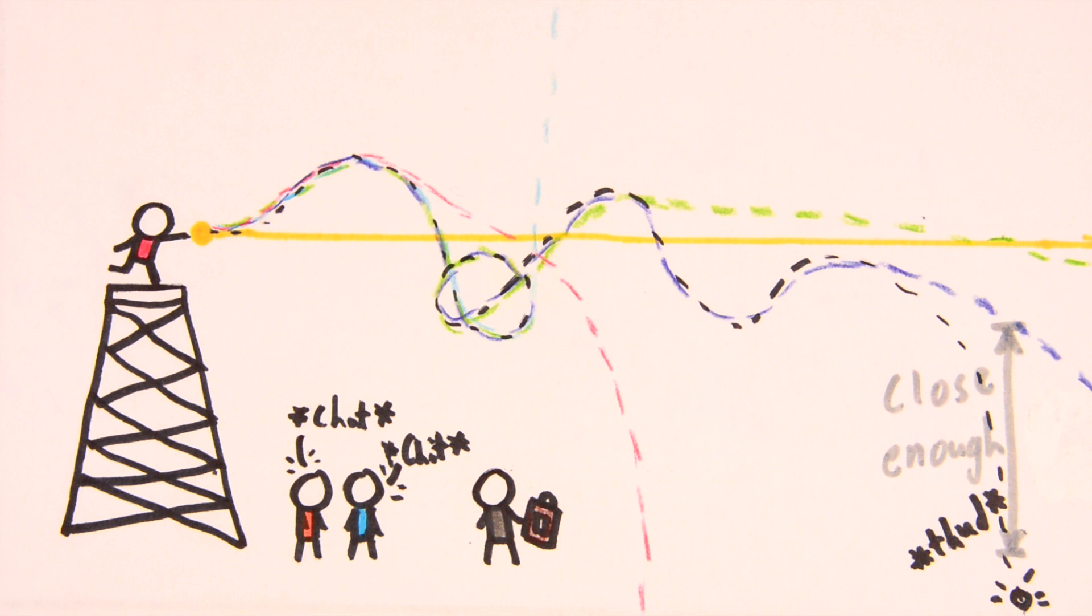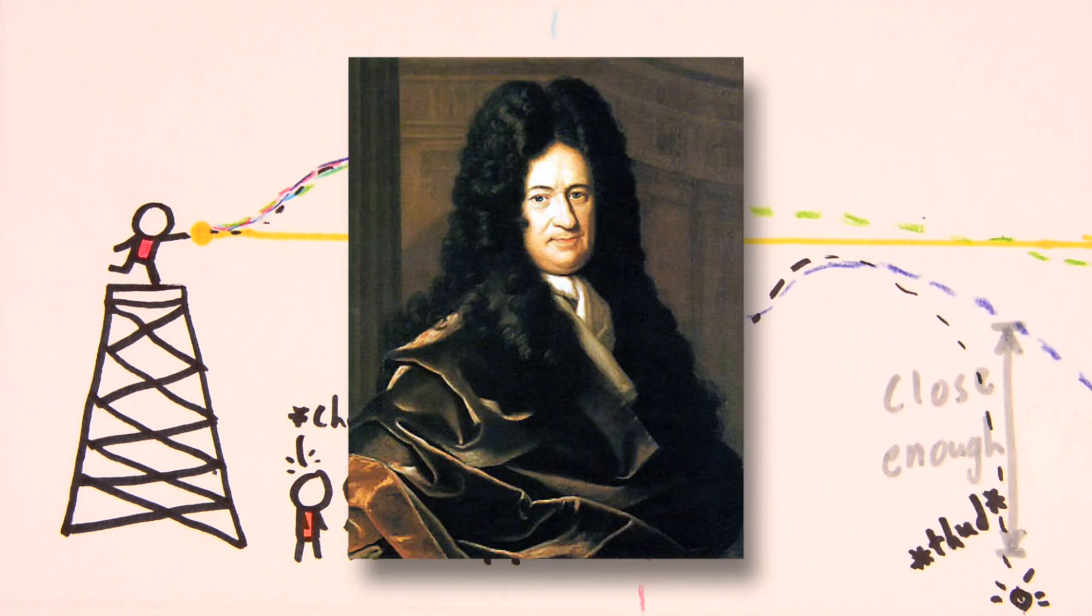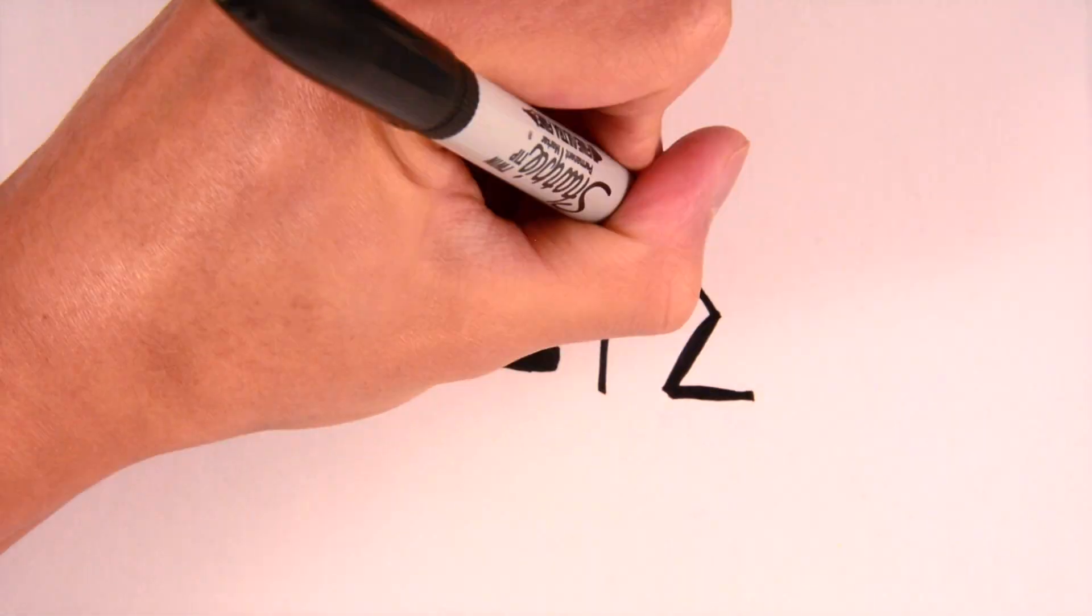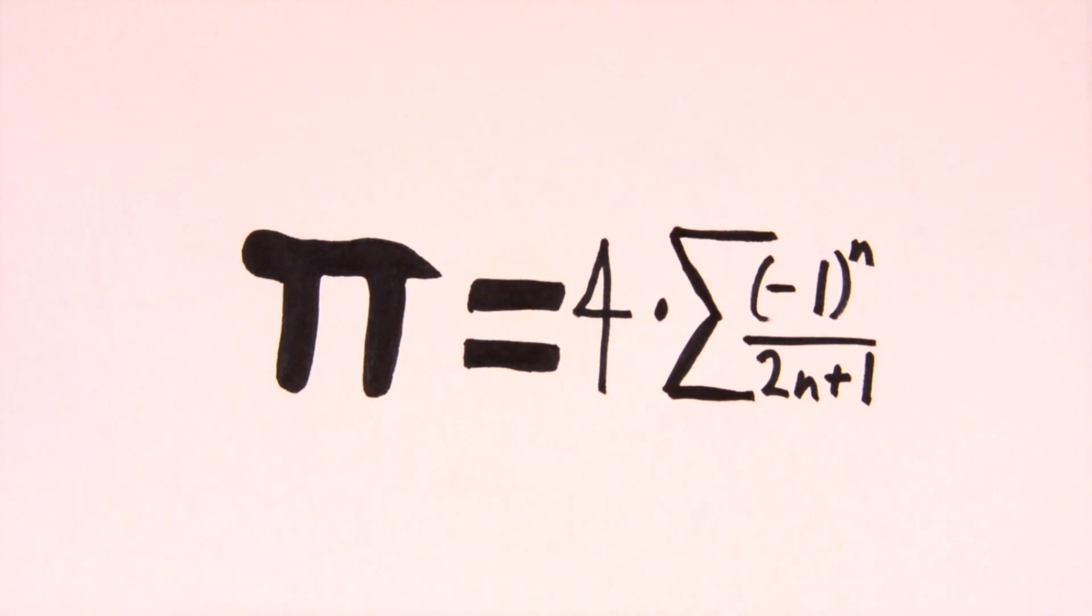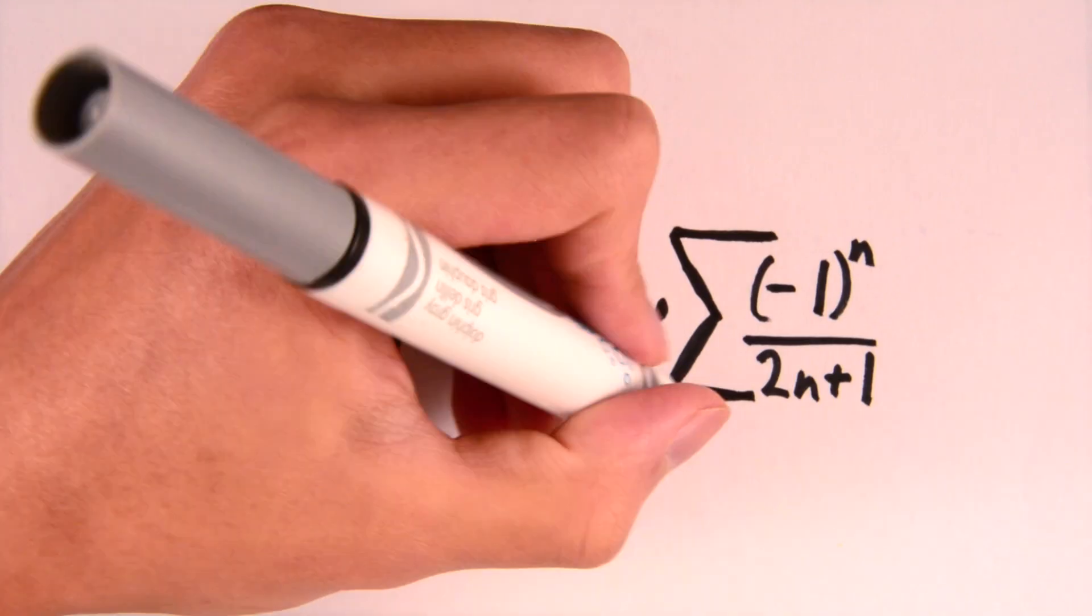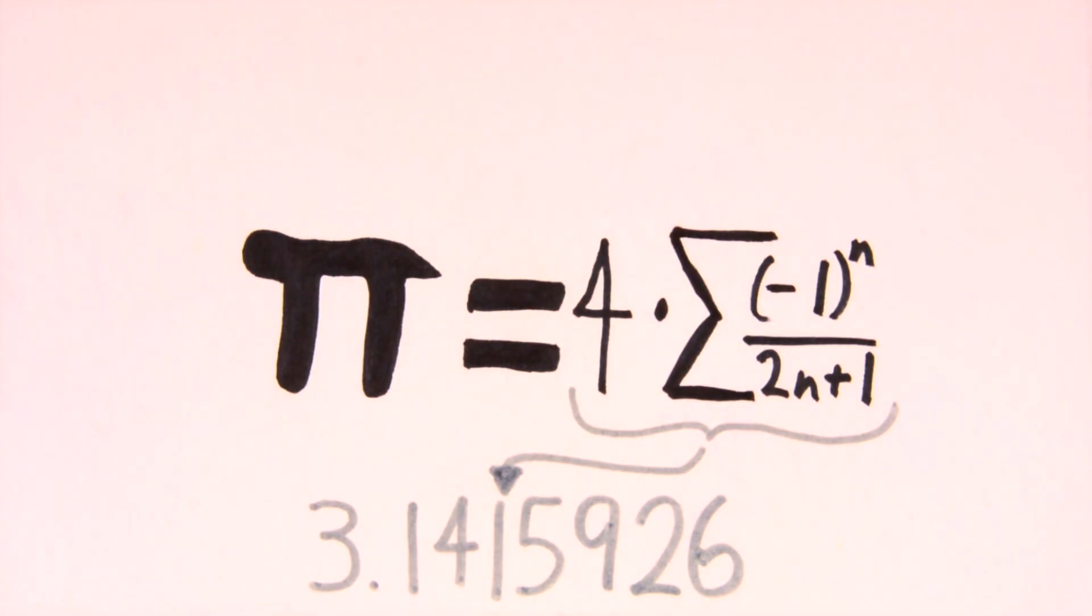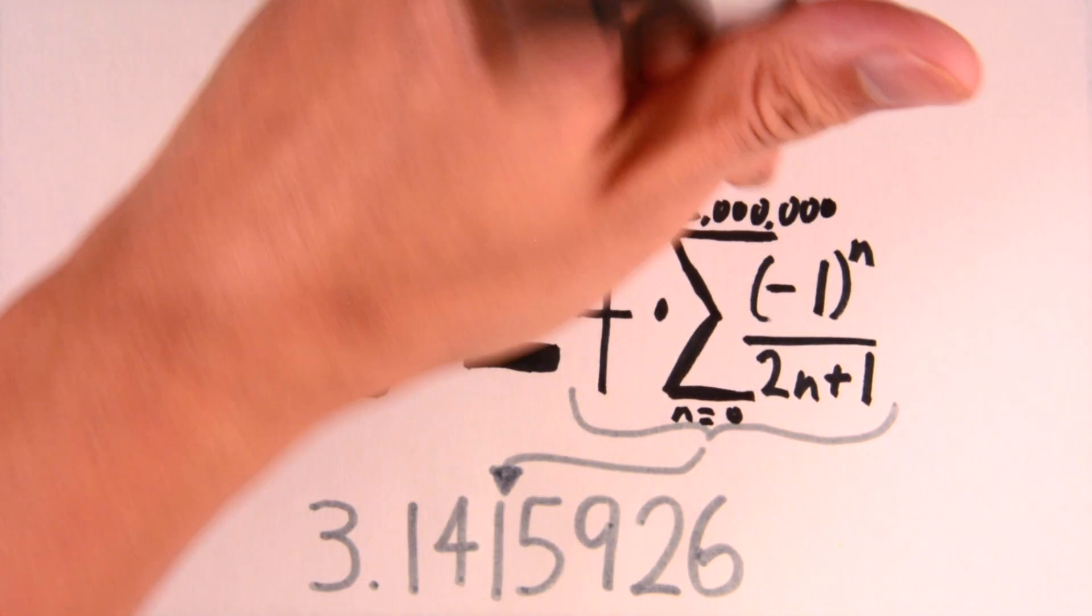And this is exactly what a 17th century mathematician named Leibniz did, but his series is slow, as in really slow. To get pi to 8-digit accuracy, 3.1415926, you would need to add more than 5 million terms.